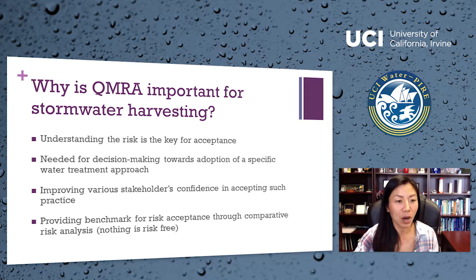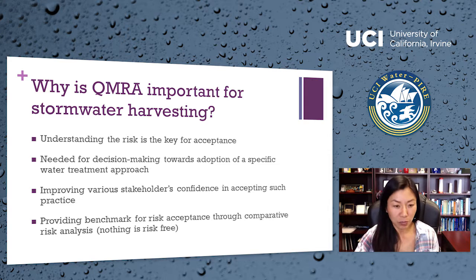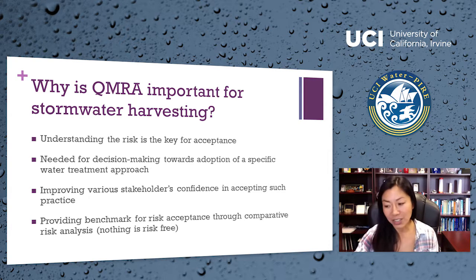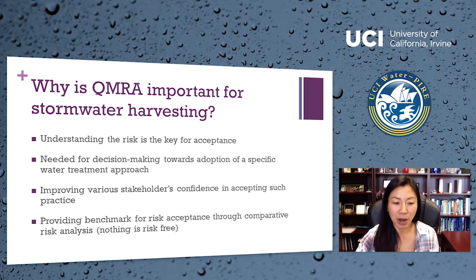Why is QMRA important? Most people are scared of the unknown. If you give them a new type of water to use, such as stormwater for showering or toilet flushing, unknown risk makes people worry and more resistant to acceptance. If we have a good understanding of the risk, that may help people accept the practice. QMRA is also needed for decision-making and to improve stakeholders' confidence by letting them know what the risk is. It also provides a benchmark for risk comparison, so you understand nothing is risk-free.